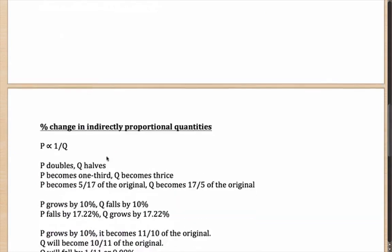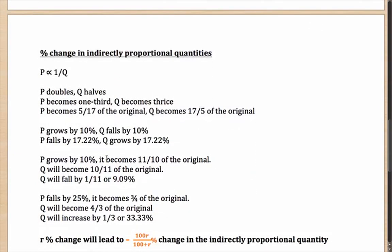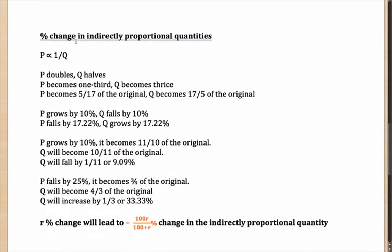To continue, let's look at percentage change in indirectly proportional quantities. Let's say P is inversely proportional to Q. Then what it means is, if P doubles, Q halves. If P becomes one-third of the original, then Q becomes thrice of the original. If P becomes 5/17 of the original, Q becomes 17/5 of the original.